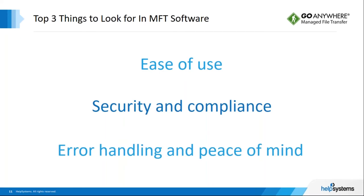And then of course error handling and peace of mind — this goes hand-in-hand with guaranteed deliveries. It's very important when dealing with customers to make sure your solution is doing all it can from a connection standpoint to ensure files are delivered, from built-in auto retries to getting immediate alerts if they fail, so that the appropriate individuals can jump on these situations and alleviate non-favorable results, especially in the case of maintaining SLAs with customers.